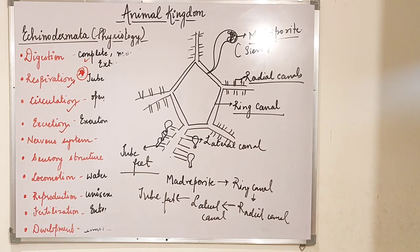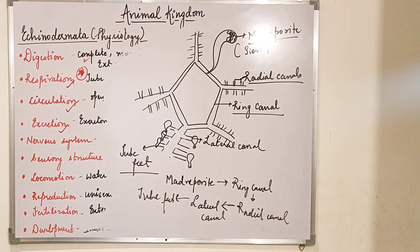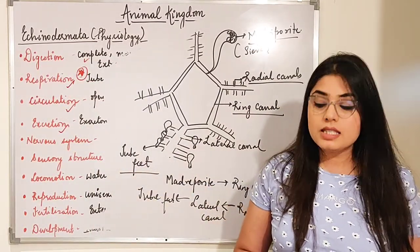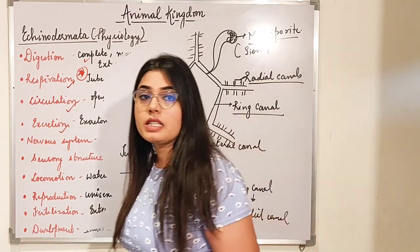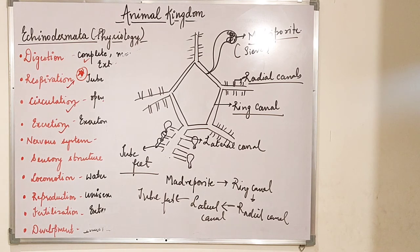Now the examples of Echinodermata: Asteria is the starfish, Antedon is the sea lily, Cucumaria is the sea cucumber, Ophiura is the brittle star, and Echinus is the sea urchin. These are all examples of Echinodermata — sea stars, sea urchins, brittle stars, sea cucumbers.